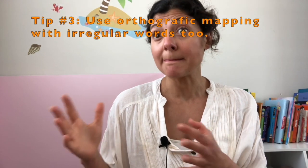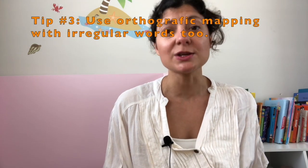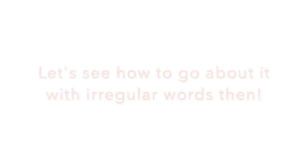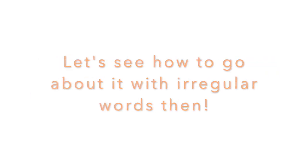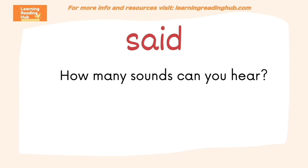Don't think that this process only works for regular words that do not present unexpected spellings. No, it works just the same. Let's see how to go about it with irregular words then. The word said. Can it be explained phonetically? Well, yes and no. Only certain parts can. So, how can you go about it? First of all, ask your child how many sounds can he or she hear in the word said.